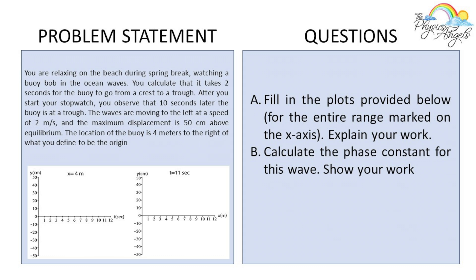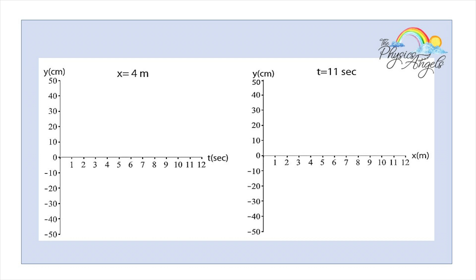So let's look at this problem. You are relaxing on the beach during spring break watching a buoy bobbing in the ocean waves. You calculate that it takes two seconds for the buoy to go from a crest to a minimum — maximum to minimum. After you start your stopwatch, 10 seconds later the buoy is at a minimum. The waves are moving to the left at two meters per second, and the maximum displacement is 50 centimeters above equilibrium. The location of the buoy is four meters to the right of what you define to be the origin.